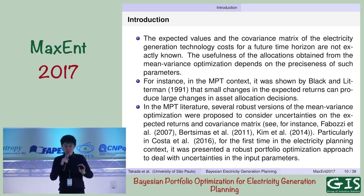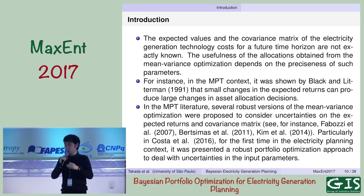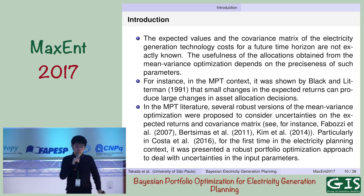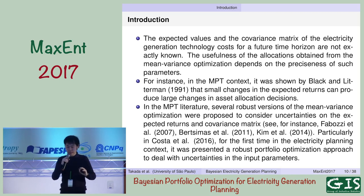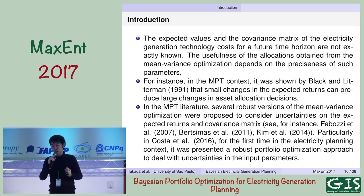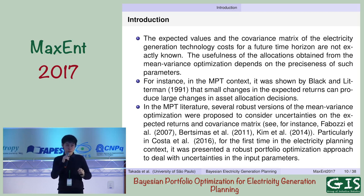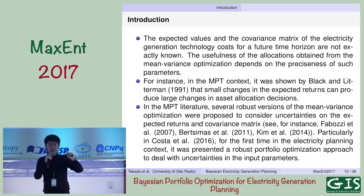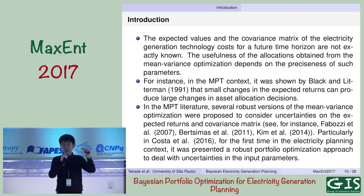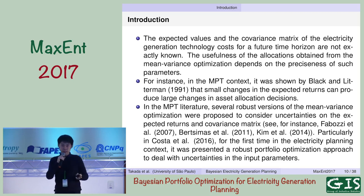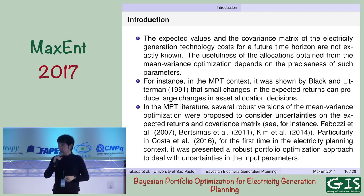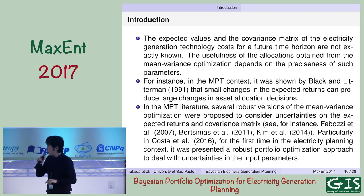In the naive mean-variance Markowitz approach, expected costs and the covariance matrix of electricity generation are considered known — and that's not true. Black-Litterman pointed out in 1991 that small changes in expected returns can produce large differences in the allocations. As we saw yesterday, changing even a single point on the efficient frontier can change allocations significantly, which is not desirable. In addition, there are many robust mean-variance approaches in the literature, and in the context of energy planning there is work from Costa et al., co-authored by Julio, proposing robust portfolio optimization for the energy planning context.